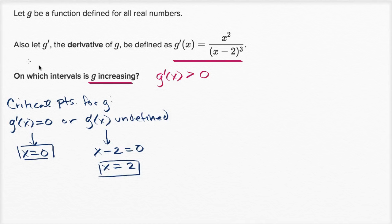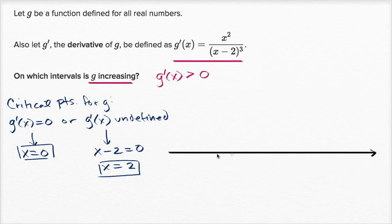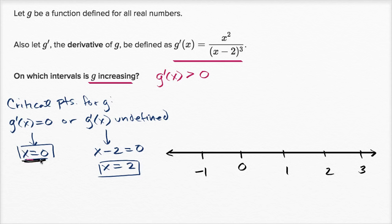Let's put the critical points on a number line and think about what g prime is doing in the intervals between them. We have a critical point at x equals zero and a critical point at x equals two. Let's consider the intervals on either side of these critical values.